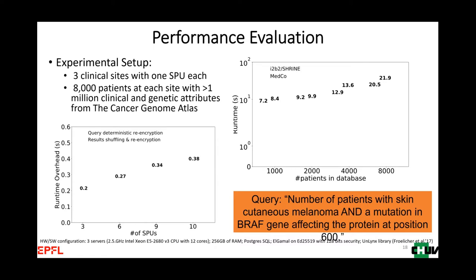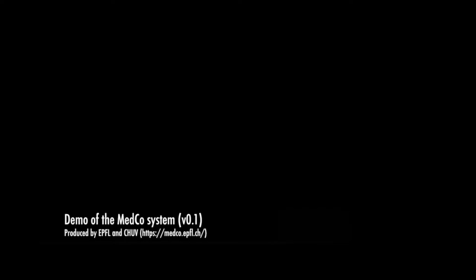We measured performance to quantify the overhead of adding homomorphic encryption on top of i2b2. We compared MEDCO's performance with a vanilla i2b2 SHRINE installation, and the overhead is almost negligible. It doesn't depend on the amount of data stored, but essentially depends on the size of the query. We tested this on data from the Cancer Genome Atlas.